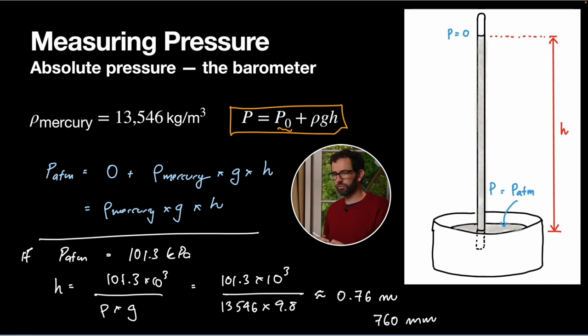This is why we want to use something really dense like mercury to build one of these. If we tried to use water, the density of water is a thousand not thirteen thousand and so our barometer would have to be way way taller in order for this to work. That's why mercury is kind of ideally suited to this because it's an extremely dense liquid.